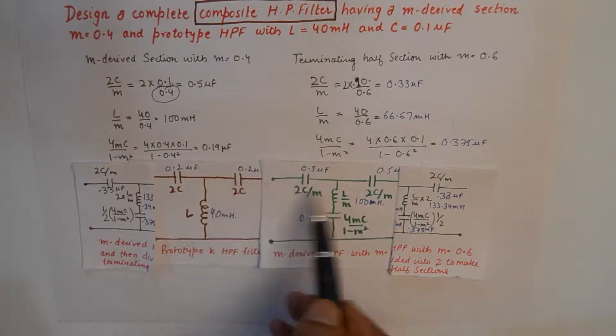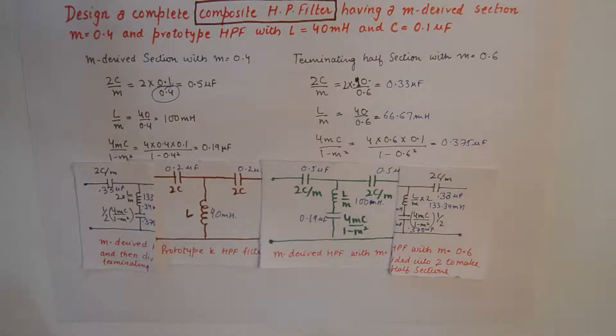You could add these up in series to get one value, otherwise rest is pretty okay. I hope this quick numerical on composite high pass filter was of help. If you liked the video, give it a thumbs up, consider subscribing to the channel and share the video too. I'll see you in the next video. Till then, take care, bye bye.